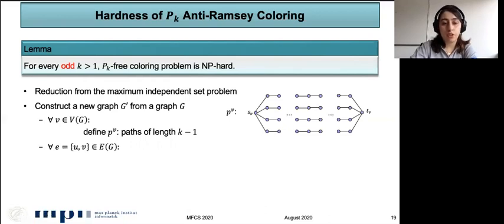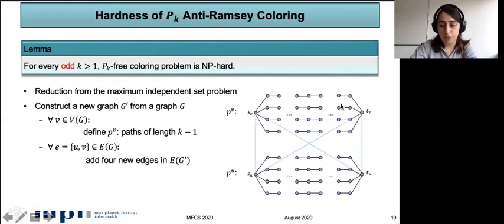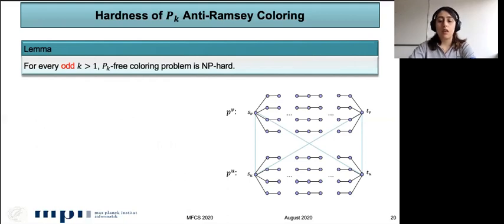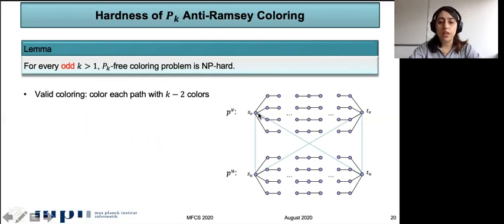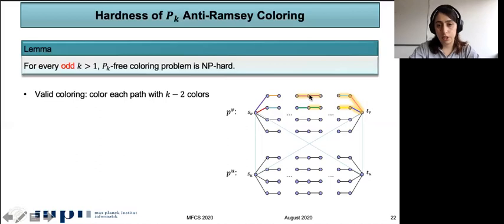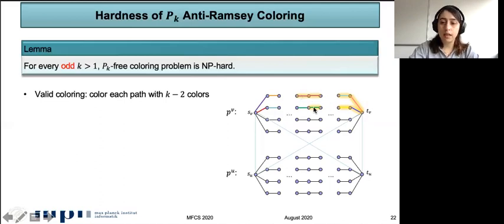If we have an edge UV in G, we add four connecting edges in G'. We can construct a valid coloring in which we color each of these paths of length K−1 with K−2 distinct colors. This is valid because any P_k copy contains one of the two middle edges. We color this path of length K−1 so that these two middle edges share the same color. Since K−1 is even, we have two middle edges, and each path of length K contains both of them. Therefore, we don't have a rainbow P_k — there are at least two edges with the same color.